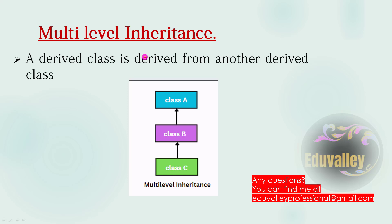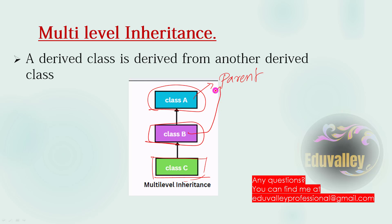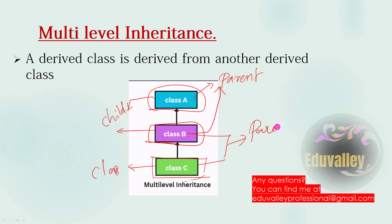Class C is derived and inherits properties. Class B inherits properties from Class A. Class A is the parent class. Class B's parent class is Class A — Class A is the parent class, Class B is the child class. Class B is also the parent class for Class C, and Class C is the child class.